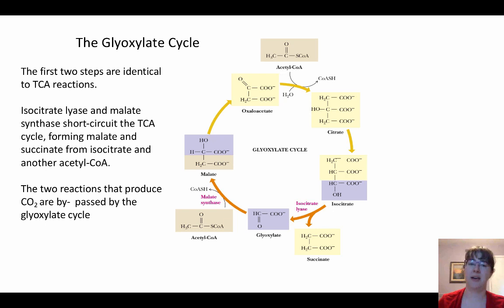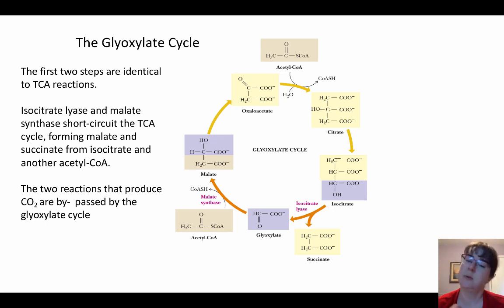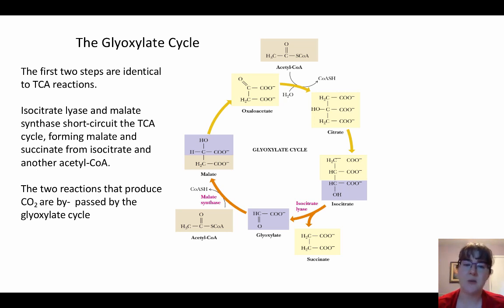Looking at the glyoxylate cycle on its own, notice that we're still using some of the pathway from the TCA cycle. We still take oxaloacetate to citrate, and citrate to isocitrate — we keep all of those. We also keep the enzyme that goes from malate to oxaloacetate. So we're keeping some of those steps, but getting rid of any that would produce carbon dioxide.